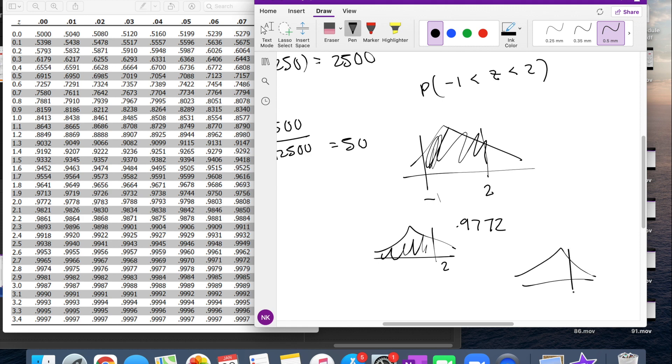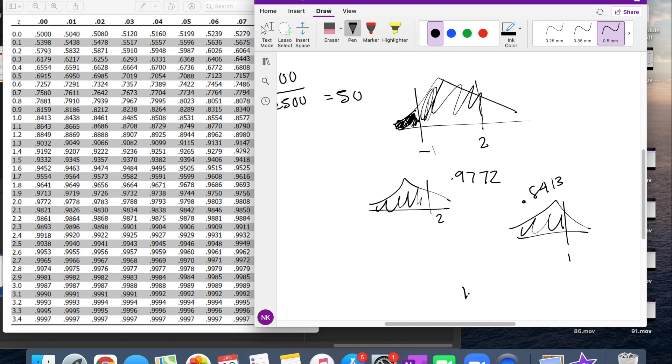Then we're going to look at 1, which tells you that this part right here is 0.8413. But what we want is actually this little bit here. So in order to find that, we just do 1 minus 0.8413, which is equal to 0.1587.